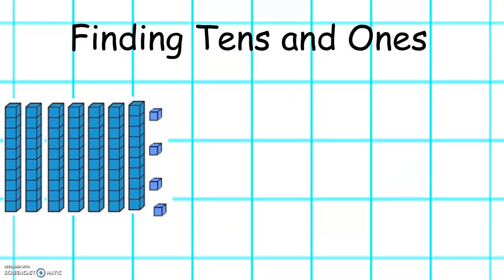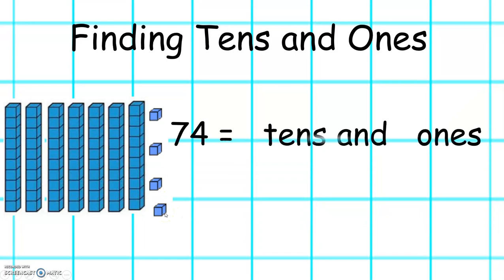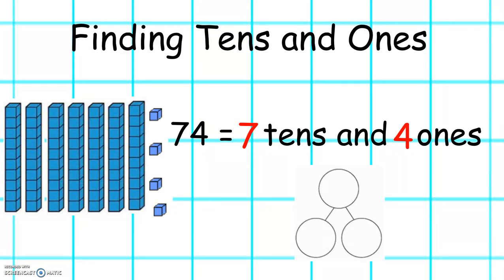Let's see how many tens and ones are in each number. We've got 10, 20, 30, 40, 50, 60, 70, 71, 72, 73, 74. 74 equals how many tens and how many ones? There are 7 tens and 4 ones. So 74 equals 7 tens and 4 ones. On our number line diagram, 74 would look like 70 and 4.